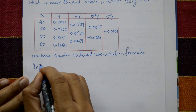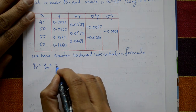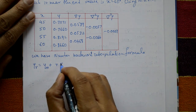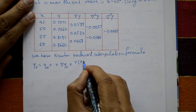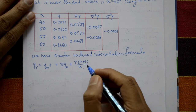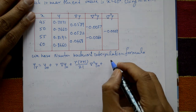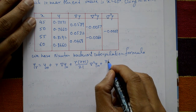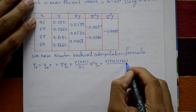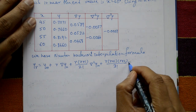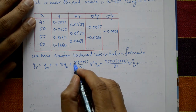Newton's backward interpolation formula is: Y_R = Y_N + R·(∇Y_N) + R(R+1)/2! · (∇²Y_N) + R(R+1)(R+2)/3! · (∇³Y_N) + … where R = (X − X_N) / H.